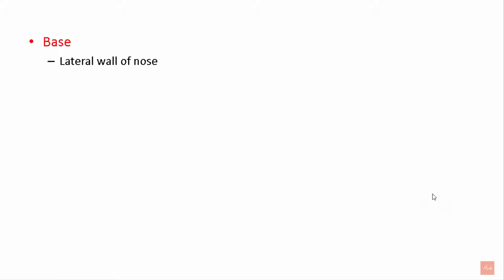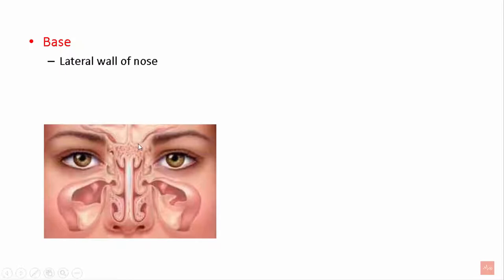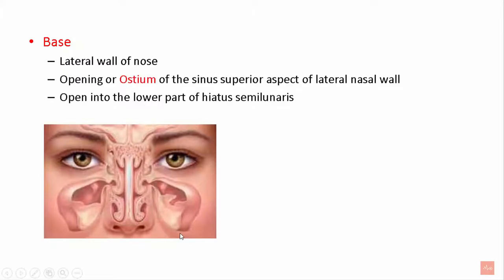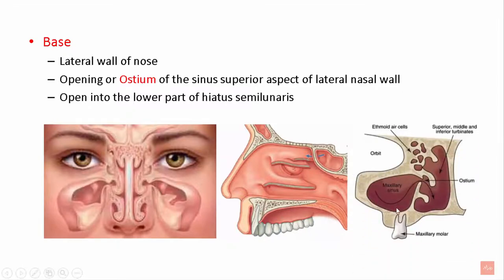The base of the maxillary sinus is related to the lateral wall of the nose. The maxillary sinus has an opening called the ostium, located in the superior aspect of the lateral wall of the nose. It opens into the lower part of the hiatus semilunaris. The lowermost portion of the hiatus semilunaris has an opening for the maxillary sinus, and the contents of the maxillary sinus are drained via the ostium into the nasal cavity.